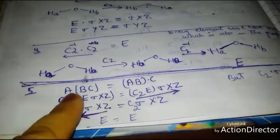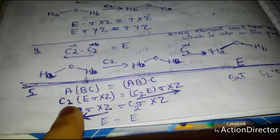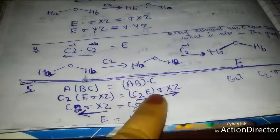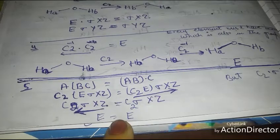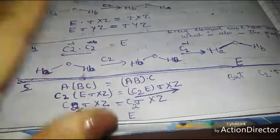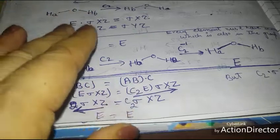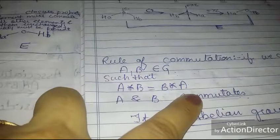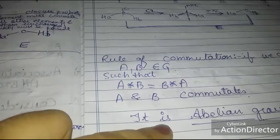The fourth property is associativity: (A × B) × C = A × (B × C). Taking three elements C2, E, and σₓᵧ and applying them in both groupings gives the same molecule back — that is E. Additionally, there is a rule of commutativity: if A and B belong to a group such that A∘B = B∘A, then A and B commute and the group is called an Abelian group. That covers all the symmetry elements and symmetry operations applied to molecules.